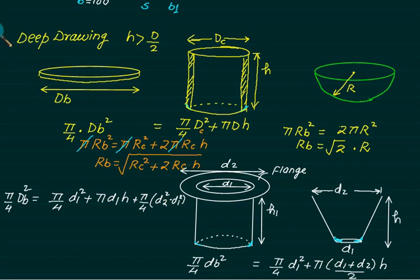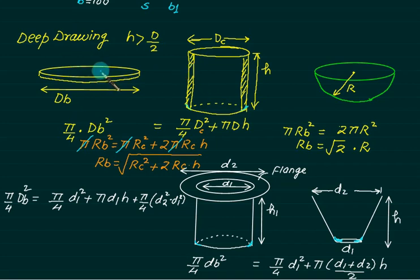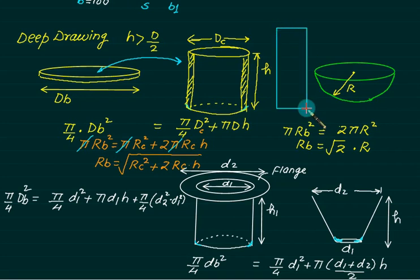In the deep drawing operation, the blank is placed on the die, the punch moves downward, and there is no shearing action — the material is pressed into shape. However, you cannot always get the final cup in a single stroke. Depending on the cup dimensions, multiple draw stages may be required.